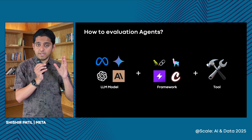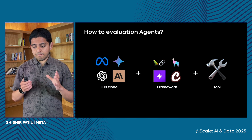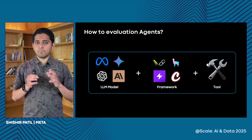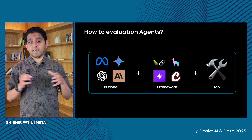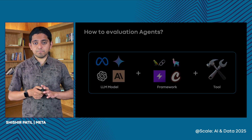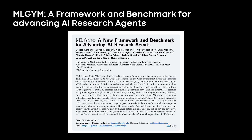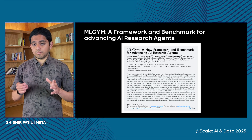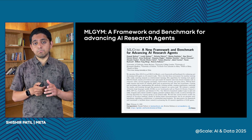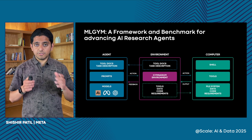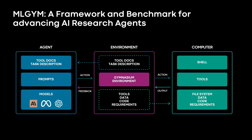We just looked at how to evaluate one component of an agent — an LLM model for its agentic capability. Now let's zoom out and ask: how do we evaluate an entire agent on its agentic behavior? An excellent example of what a complete system looks like is MLGym, released just a few months ago by folks at Meta along with collaborators. MLGym is a unified framework that enables researchers to easily implement and experiment with different machine learning training algorithms for large language model agents. MLGym itself consists of two components: the environment, and the MLGym bench, which is the benchmark.